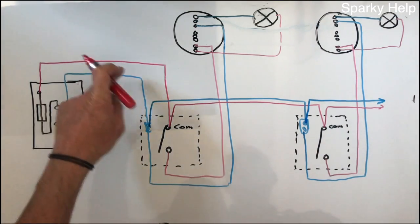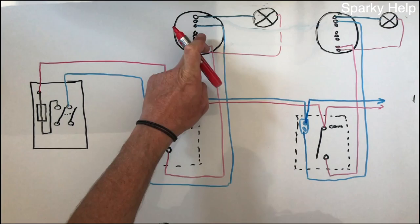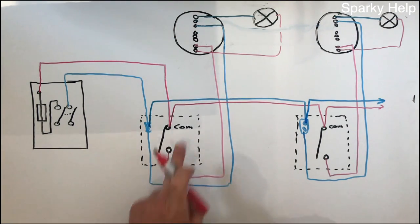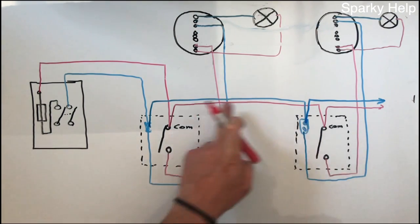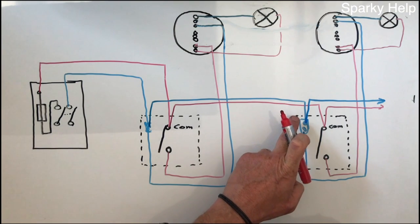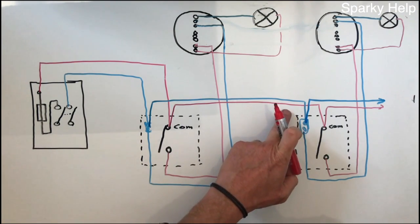So we have a twin and earth cable coming in, a twin and earth cable coming up to the light, this one you would mark. Twin and earth cable linking to provide power to the next set of lights, don't need to mark this one because we know what it's going to do.